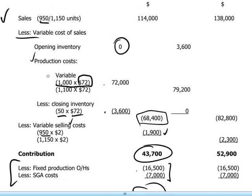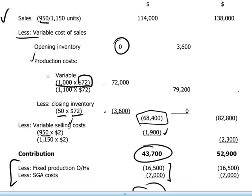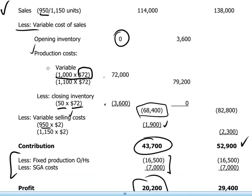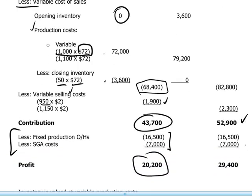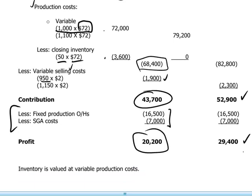I'll leave it to the candidate to calculate year two and verify that the marginal costing format has been followed consistently to arrive at a contribution of $52,900 and a profit figure of $29,400. As a reminder, inventory has been valued under this method at the variable production cost.